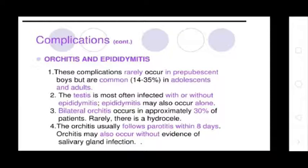Complications — Orchitis and Epididymitis: These complications rarely occur in prepubertal children. They are more common in adolescents and adults, occurring in 15 to 35% of cases. The testis is most often infected with or without epididymitis. Epididymitis may also occur alone. Bilateral orchitis occurs in approximately 30% of patients. Rarely there is a hydrocele. Orchitis usually follows parotitis within 8 days, and may also occur without evidence of salivary gland infection.